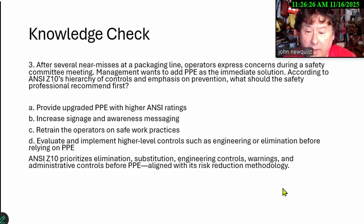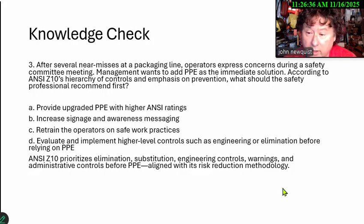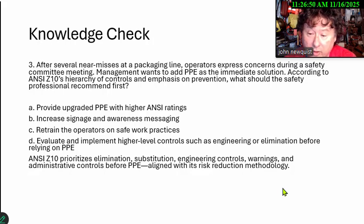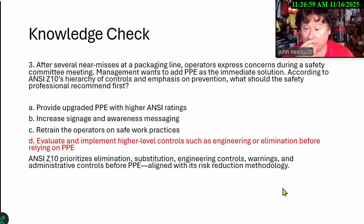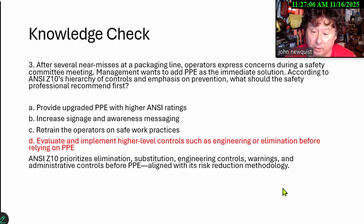After several near misses at the packing line, operators express concern during a safety committee meeting. Management wants to add PPE as its immediate solution. According to ANSI Z10's hierarchy of controls and emphasis on prevention, the correct answer is D: evaluate and implement higher-level controls such as engineering or elimination before relying on PPE, because it prioritizes the hierarchy of controls — that's their risk reduction methodology.